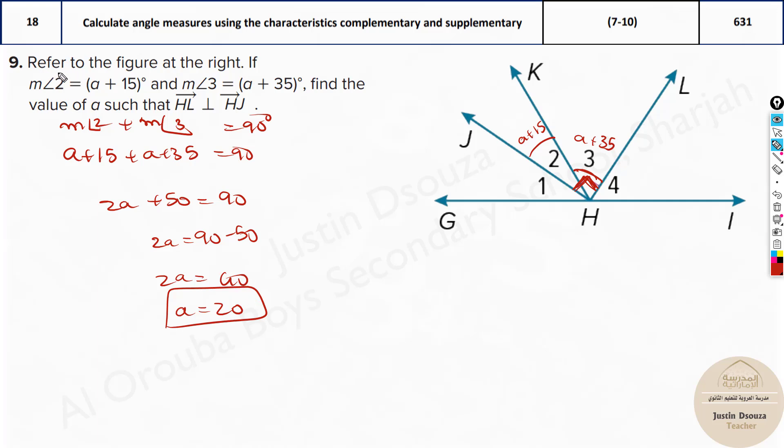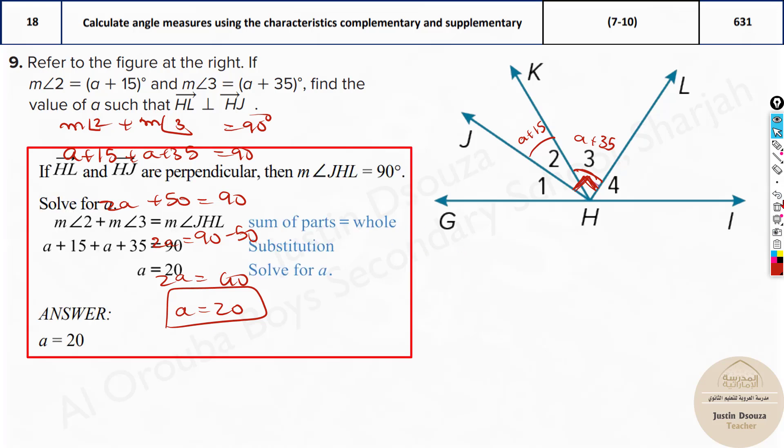And we have not been asked to solve for measure of angle 2 or 3, so this is it. a is done. But if they asked find the measure of angle a, then you need to substitute this back over here. So then what would have happened? a + 15, that is equal to 20 + 15, that is 35. But they have not asked this part, so I'm not going to write this. They have just asked you the value of a and we have found it out. That's the answer. a is 20.